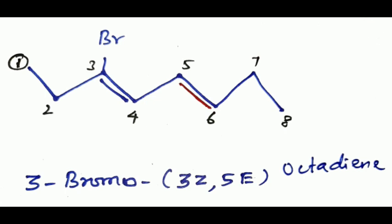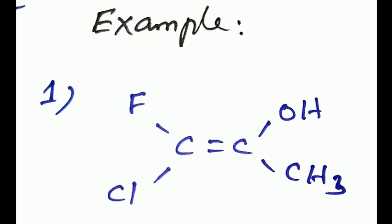This is a very interesting one. This is three-bromo-three-Z-five-E-octadiene. Now we will discuss some more examples in E-Z nomenclature.